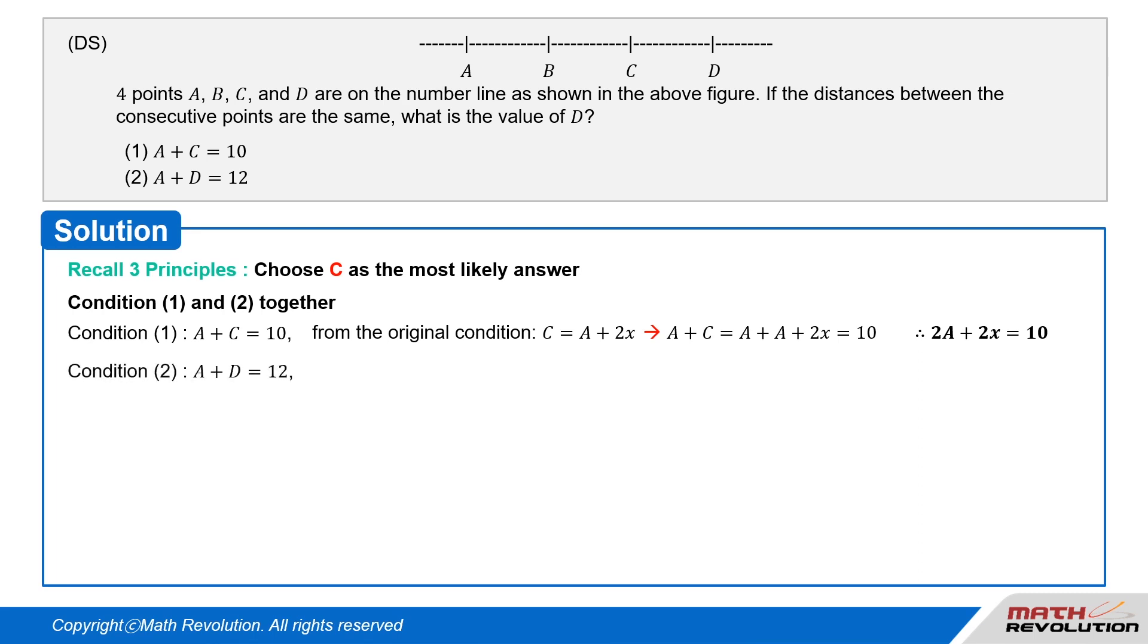Condition 2 tells us that A plus D equals 12. Substituting A plus 3 times x in for D gives us A plus A plus 3 times x equals 12. And combining like terms gives us 2 times A plus 3 times x equals 12.